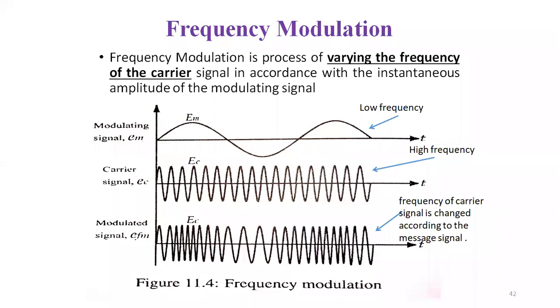We call this FM — it is the frequency modulation. We call this AM — it is the amplitude modulation. AM is found on AM radio.